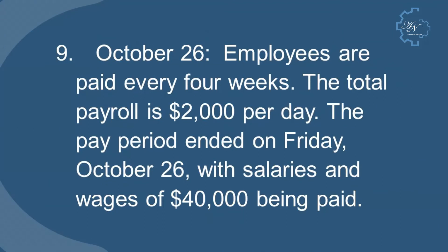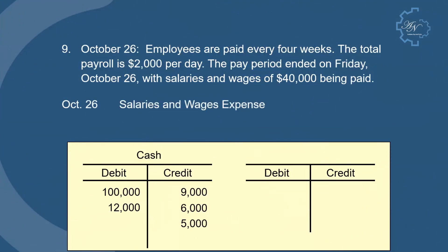October 26: Employees are paid every four weeks. The total payroll is $2,000 per day. The pay period ended on Friday, October 26, with salaries and wages of $40,000 being paid. We have salaries and wages expense — which increases, so it is debited — and cash, which decreases, so it is credited.